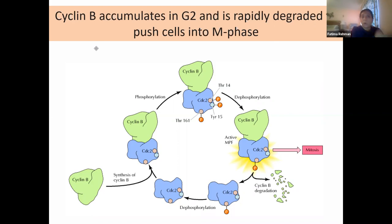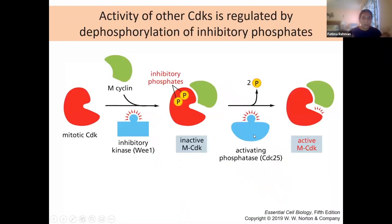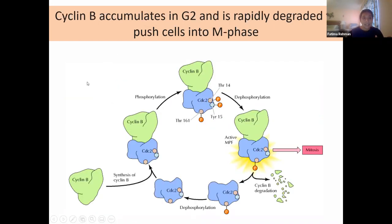The cell cycle control system uses many different levels of control. At the most basic level, CDKs are always present at a constant level, but their activity is controlled by the cyclical production of cyclins related to each part of cell cycle. On a second level, CDKs can be activated or inactivated by phosphorylation even when bound to their cyclins.